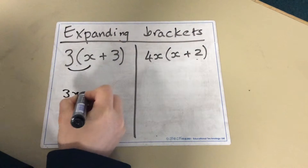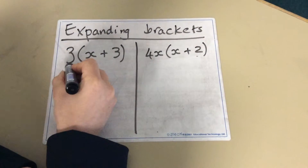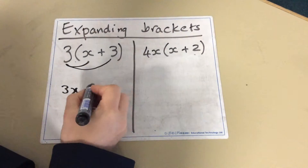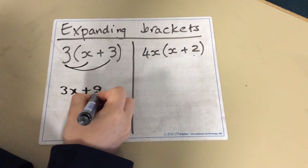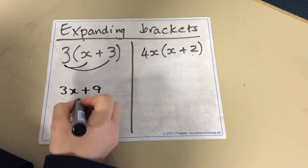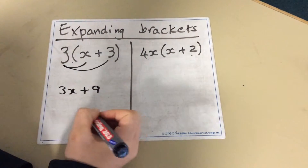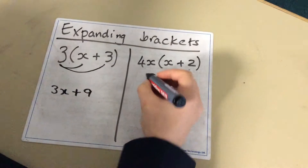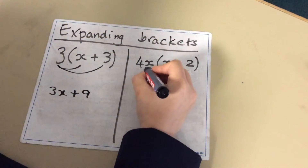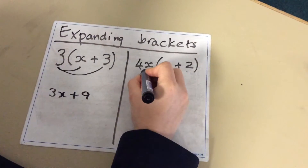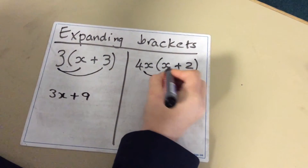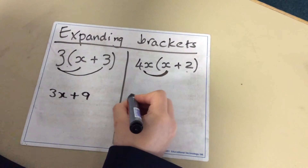You copy down the plus and then you do 3 times 3 which is 9. So your answer is 3x plus 9. For this one it's harder, so you do 4x times x, which is 4x squared.